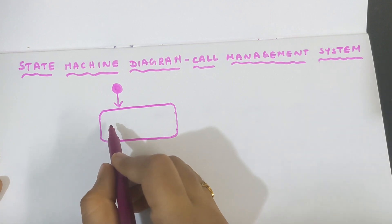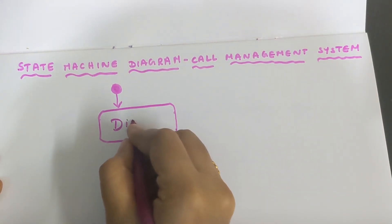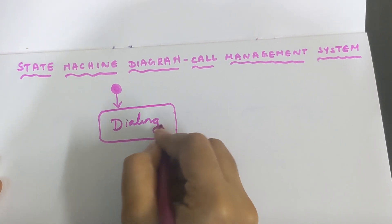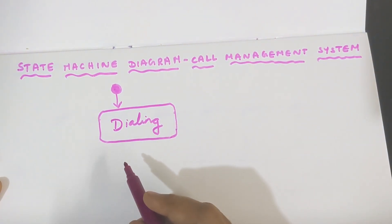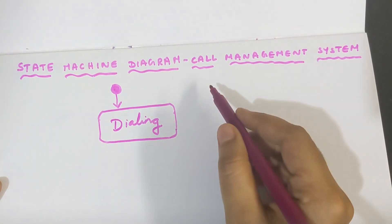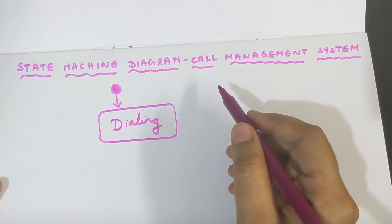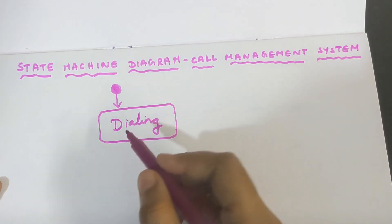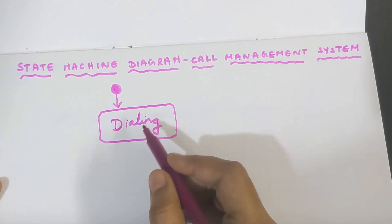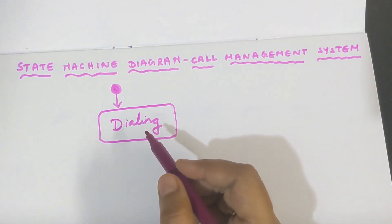The state name I am going to write inside this is 'dialing.' Call management system is about speaking over the phone — I want to call someone and speak with them. So first, I need to dial the number of the person I want to speak with.